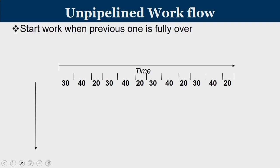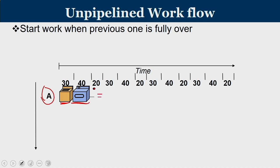We will now understand the concept of pipelining using a laundry example. Consider washing clothes for person A. The laundry operation consists of a washing unit taking 30 minutes, followed by a dryer taking 40 minutes, then 20 minutes to fold. Altogether it takes 90 minutes for person A's clothes to be washed.